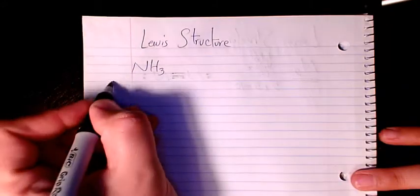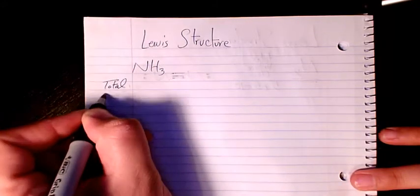What's up guys, this is Massey. Welcome to my channel. In this video I want to show you how to draw a Lewis structure for ammonia or NH3. First of all, I need to find out the total valence electrons.